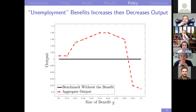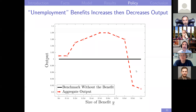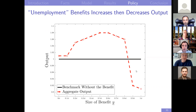On this graph, the x-axis shows the size of this entrepreneurial income threshold, y-bar, and the vertical axis shows aggregate output. At low levels of this benefit, it is very successful at encouraging individuals to select higher-risk, higher-expected-productivity projects, improving the distribution of firm productivities and therefore output. But at high levels of this benefit, adverse selection swamps these positive effects: lower-ability individuals now select into entrepreneurship not because they expect to make money, but simply because these unemployment-like benefits exceed their labor market opportunity cost.